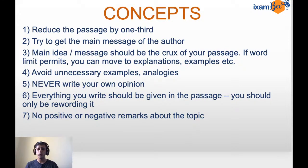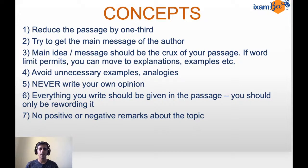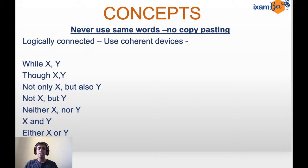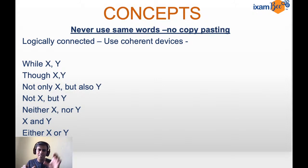Now we are going to learn certain structures and coherent devices. When you want to reduce a passage to one-third of its size, you need to use certain structures. These are basically called correlating conjunctions that will reduce the size of your sentence. Even if you want to express the same thing, with these structures you'll be able to make it shorter. Let's start one by one. First is 'While X, Y.' When do you think this structure is used? For example: 'While I was studying, I got a call.'